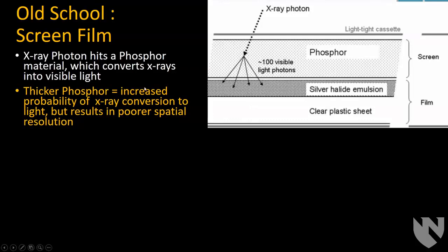The x-ray hits the phosphor and converts it into visible light. The thicker the phosphor, the more likely it is to stop the x-ray and turn it into light, but the more the light can disperse within the phosphor, giving you lower resolution. Having two phosphors also means more scatter from the photon and lower resolution.